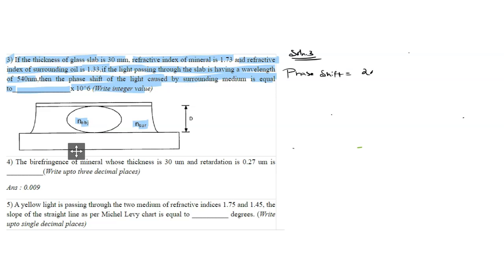2π upon λ, that is wavelength, into path difference. This path difference is nothing but retardation. The value of π here